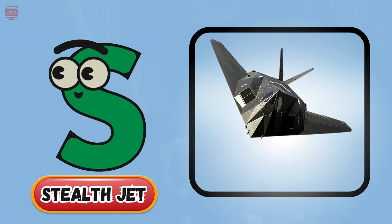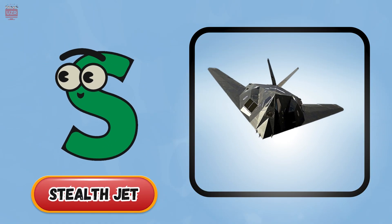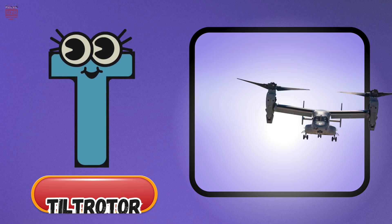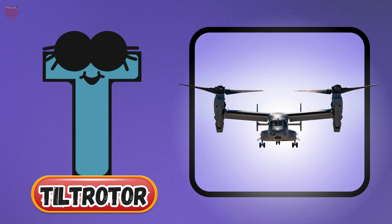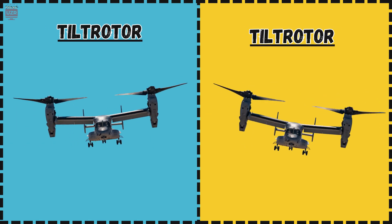S is for stealth jet, flying quiet in the night. T is for tiltrotor, lifting up and turning right.